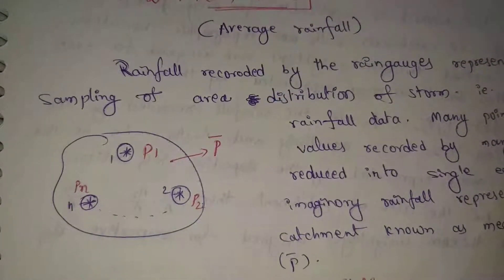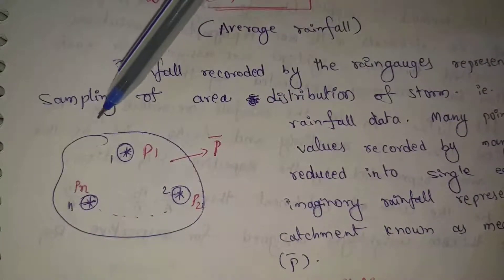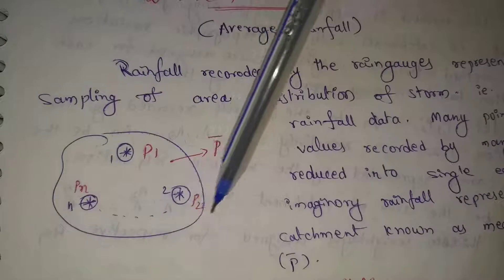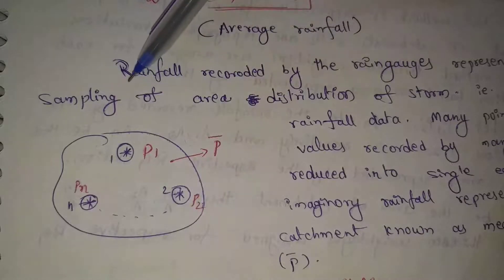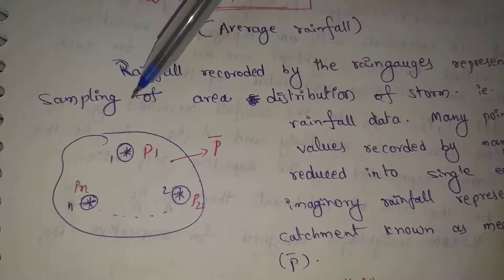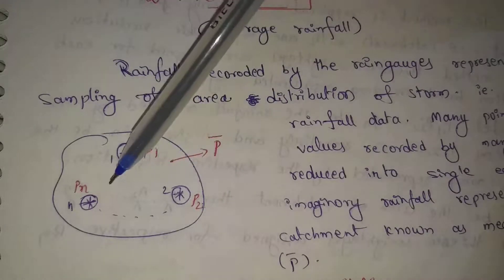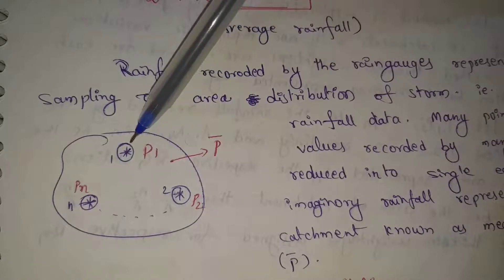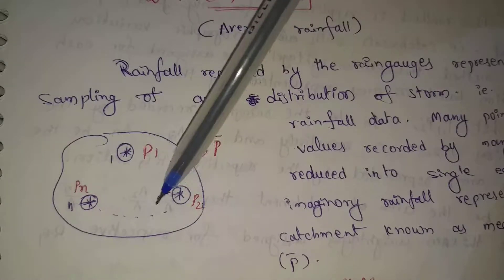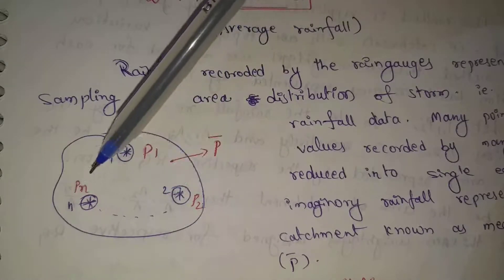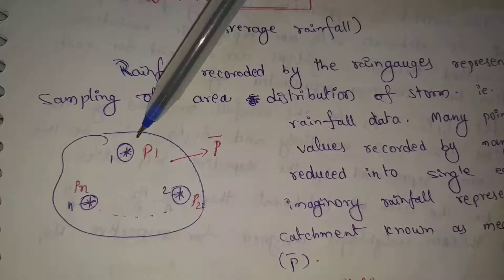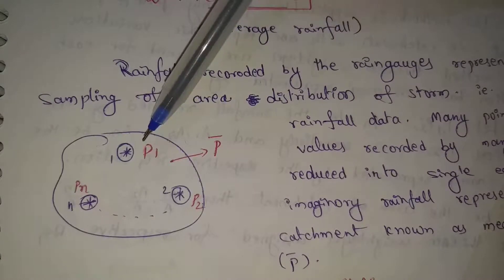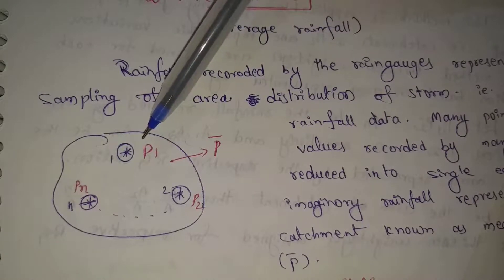For example, here we have a catchment area. When we have a catchment area, we have some rain gauge stations present — one, two, three, and so on.